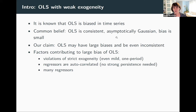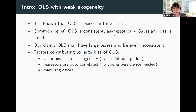We think there are three factors contributing to large biases of OLS. First, strict exogeneity is not an assumption you can use. Even a very mild violation — such as a feedback for one period only, meaning the outcome affects the next regressor but then disappears — will be enough to produce very large biases. Second, in time series most regressors are autocorrelated. We don't need persistence — this is not a talk about unit roots. What's needed is just the presence of first-order autocorrelation to produce biases. Third, many regressors: the bias is proportional to the number of regressors, and OLS may become inconsistent when the number of regressors grows proportionally to the sample size.